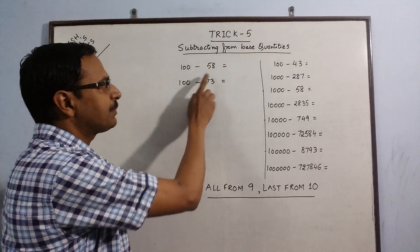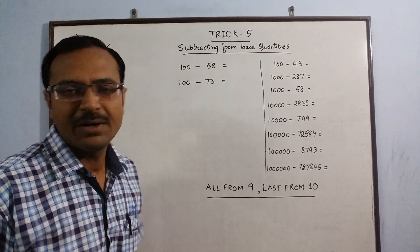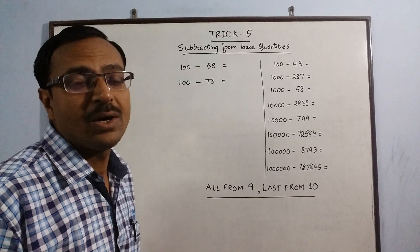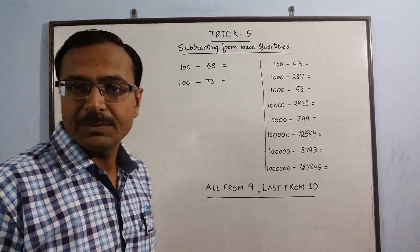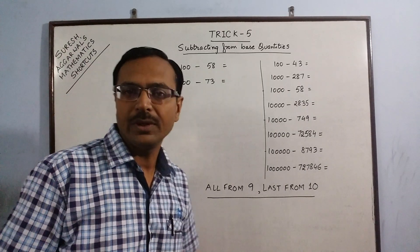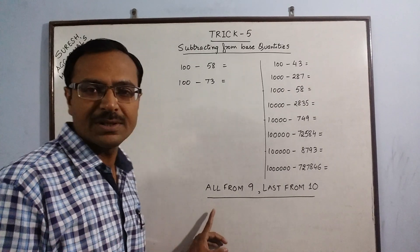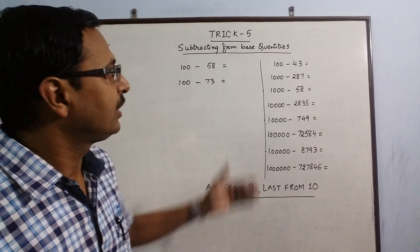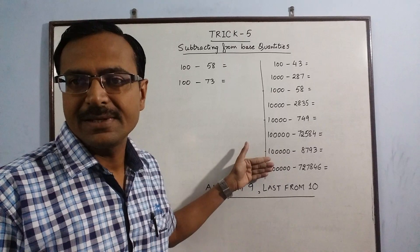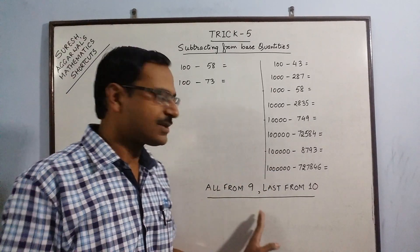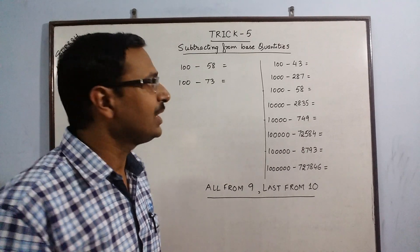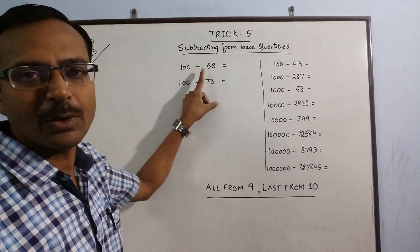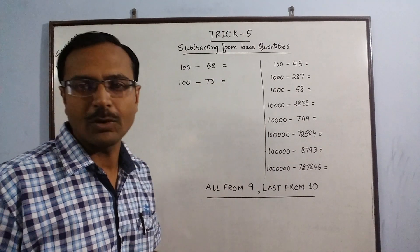Say we have to subtract 58 and 73 from the base quantity 100. For this we are going to utilize a Vedic Maths concept which we have already dealt with in previous videos, and that concept is called 'all from 9 and last from 10.' Whenever we confront base quantities in mathematics, we make use of this rule. Similar rule will be applied here — we keep subtracting from 9s and the last digit we subtract from 10.